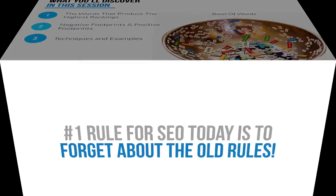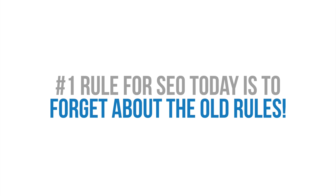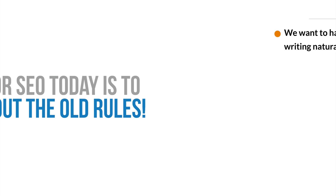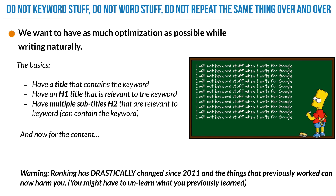Number one rule about SEO today: forget all about the older rules. A lot of times when I see people writing for SEO, they take the rules we used to have in 2011 or prior and keep repeating them. The number one thing I see is keyword stuffing — do not repeat the same thing over and over. You actually lose points when you repeat things instead of gaining points.